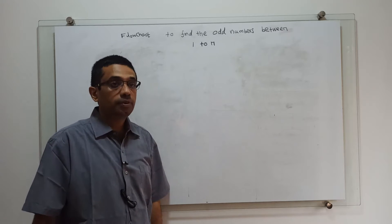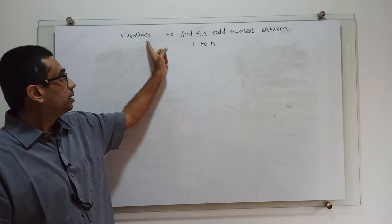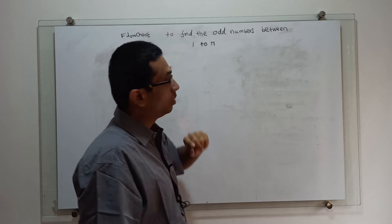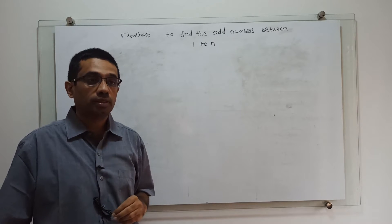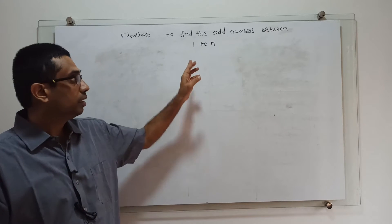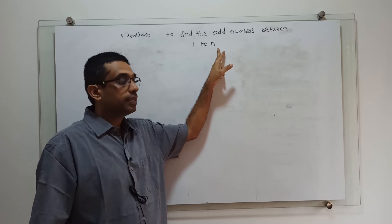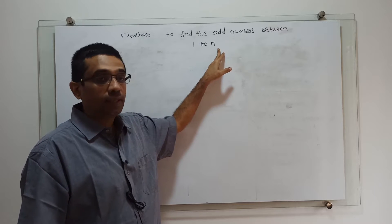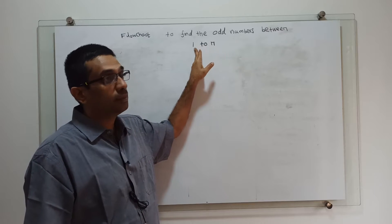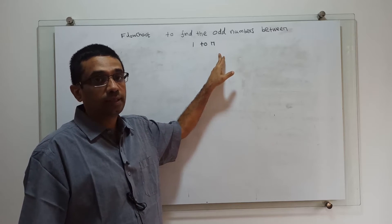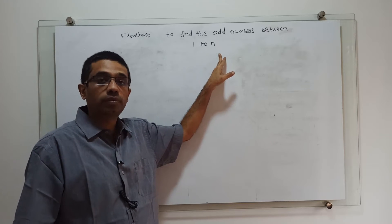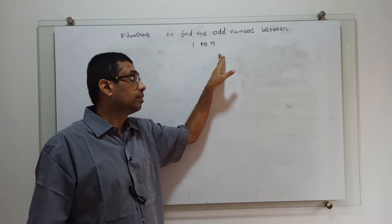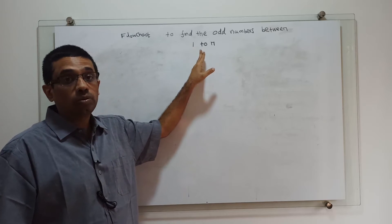Hello friends, welcome to the video lecture on the flowchart to find the odd numbers between 1 to n. We have to draw a flowchart to find the odd numbers between 1 to n. N is a range given by the user. If n is 100, we find odd numbers between 1 to 100. If n is 1000, between 1 to 1000. If n is 5125, between 1 to 5125.